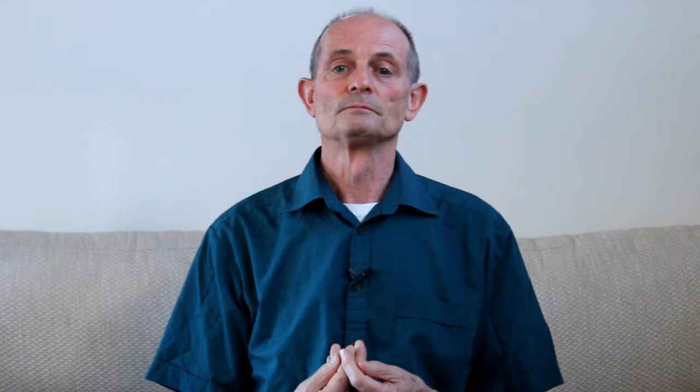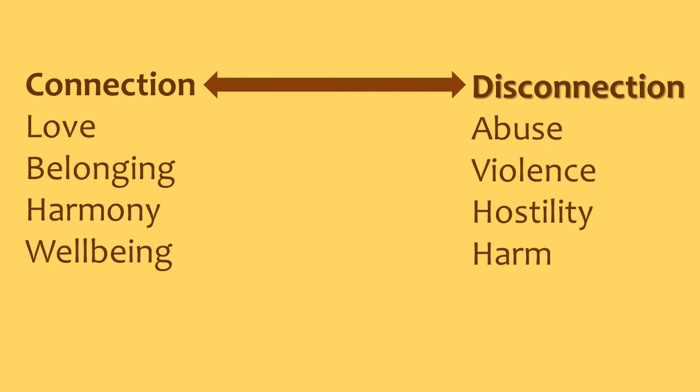This interconnectedness of being fits very easily with systems principles. This model is included to highlight the way a healthy system must effectively regulate its own internal needs and manage relationships with external systems, maintaining all connections in a dynamic, life-enhancing way. We can create a continuum for complex systems: at one end is connection, harmony, and love, and at the other end is disconnection, abuse, and violence.